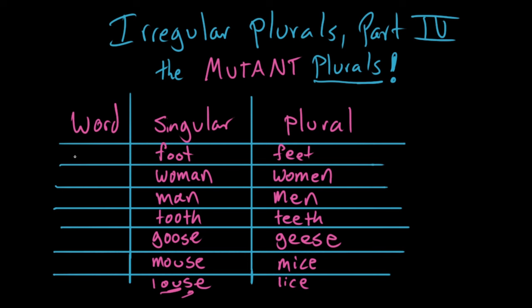Why is this the case? I'm so glad you asked. I'm going to save that for another video. In the meantime, just these seven words, one, two, three, four, five, six, seven, are the only words in English that behave this way.